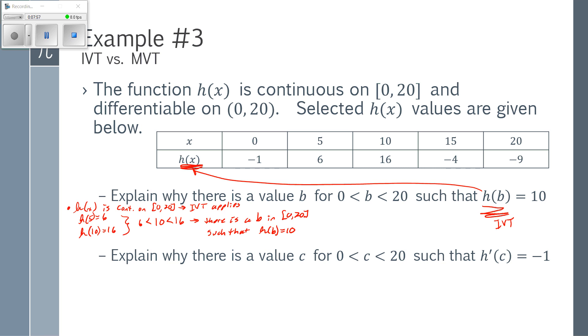If I move to the second thing I'm asked here, I'm being asked with that same table of values, why is there a value C within that interval 0 to 20 such that H prime of C is equal to negative 1? Notice, the only difference is in the first problem I was asked about H of B or about H and in this problem I'm asked about H prime. Since my table is about H but this is H prime, this is an MVT question.